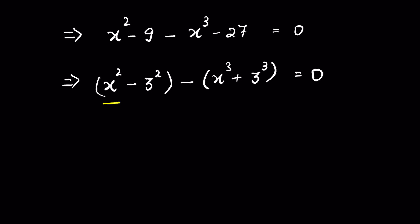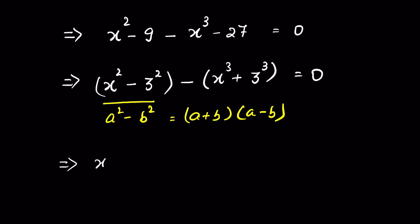Now x² minus 3² is in the form of a² minus b², the difference of squares. So we can write it as (a + b)(a − b), which gives us (x + 3)(x − 3).